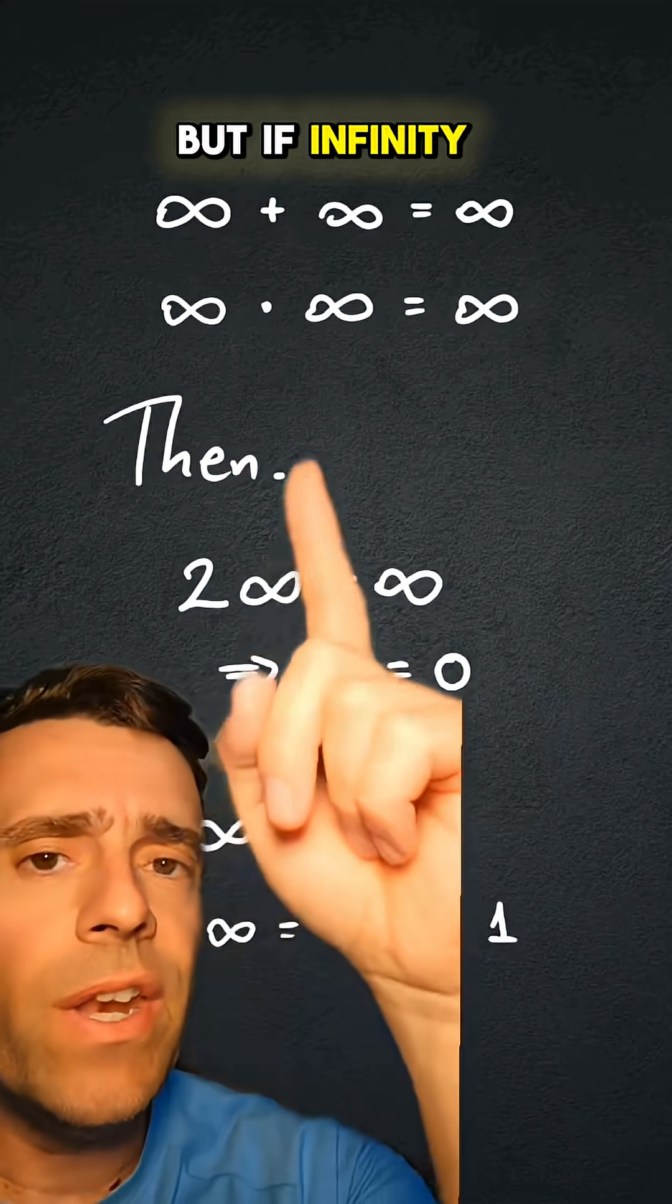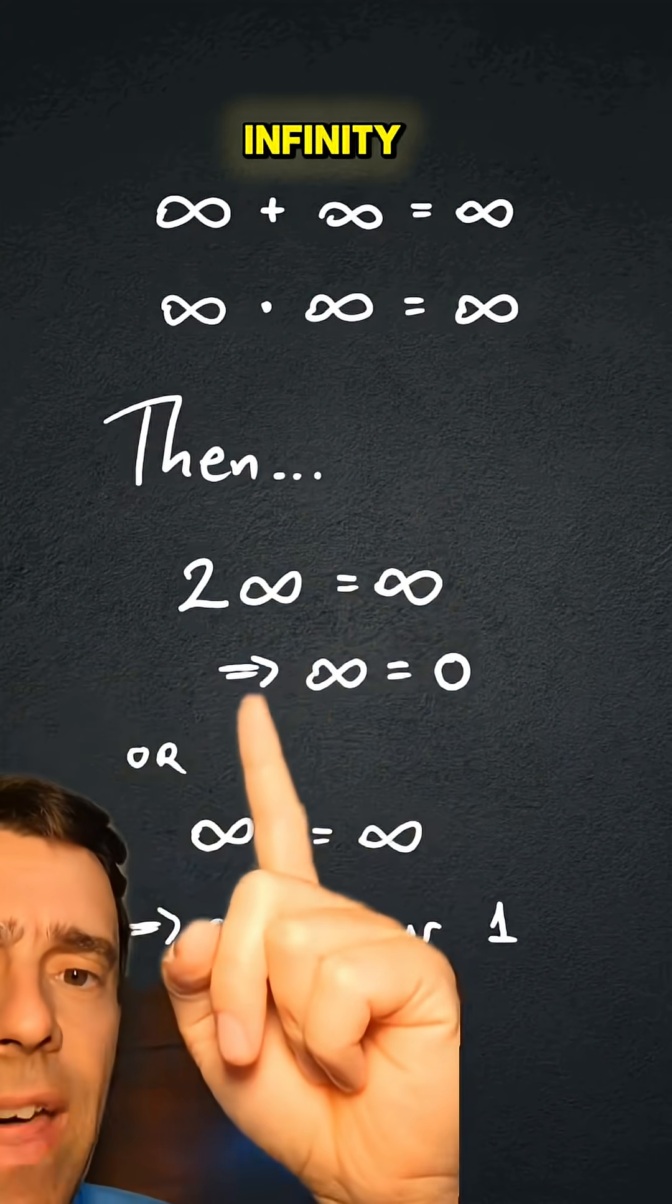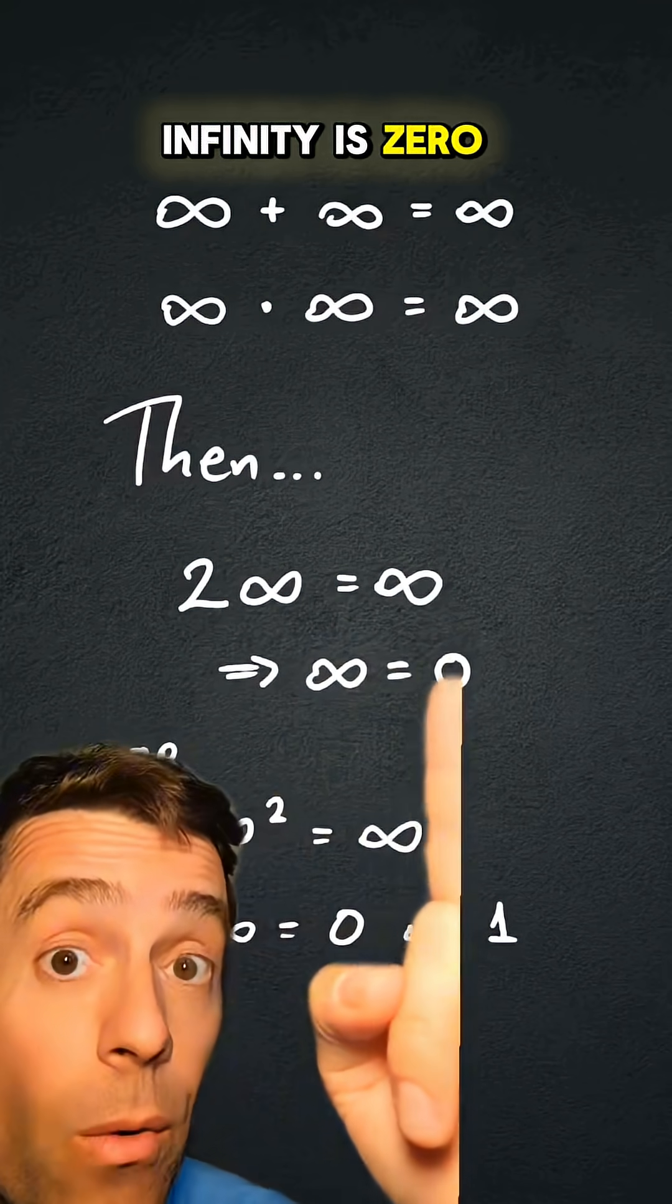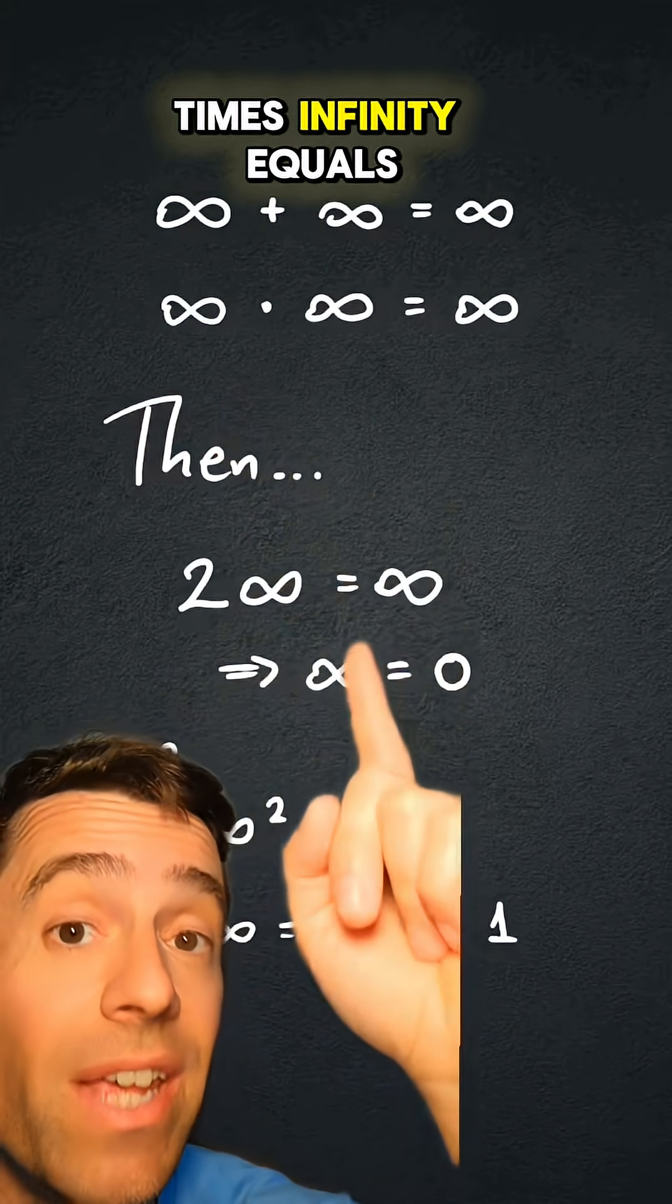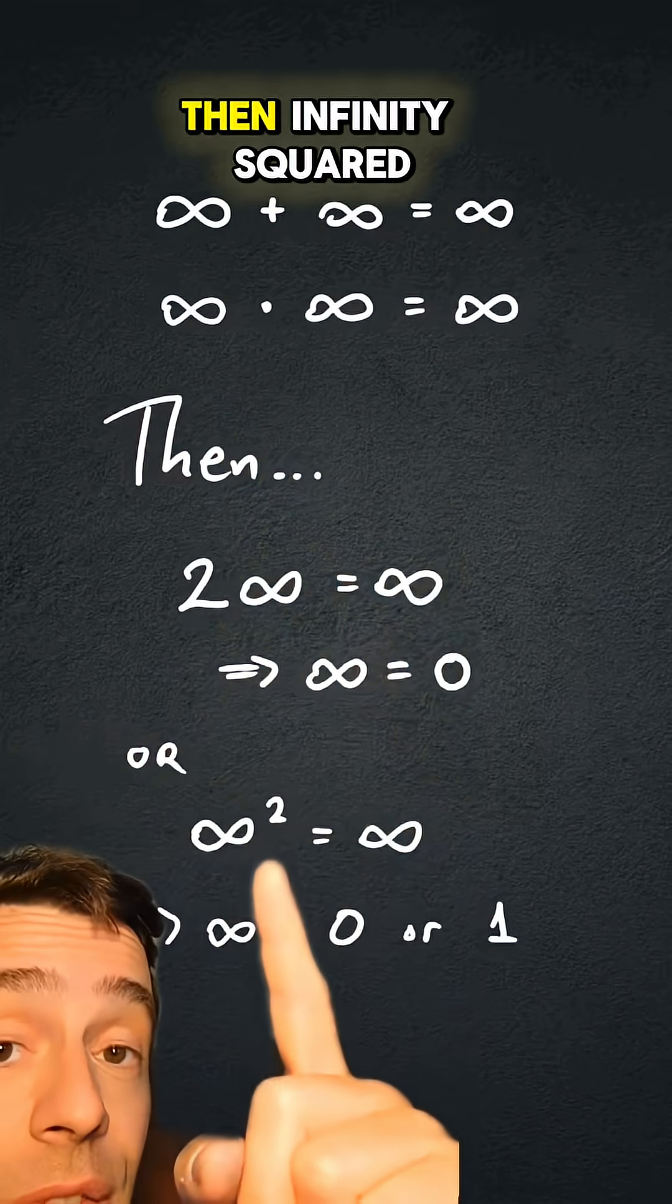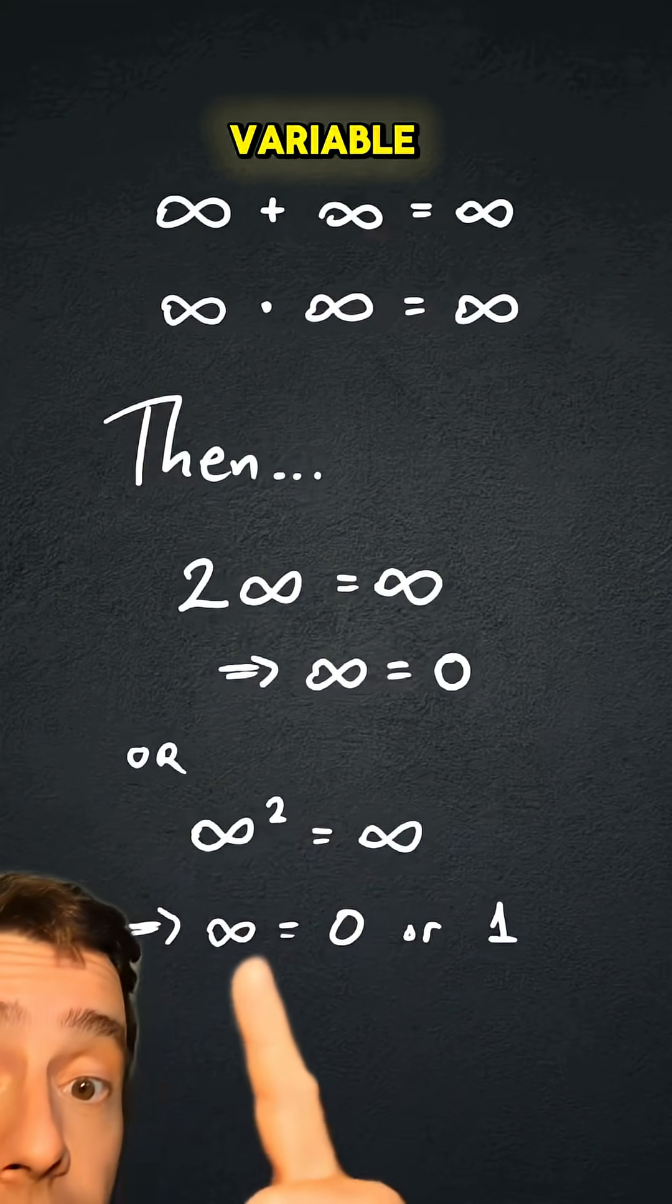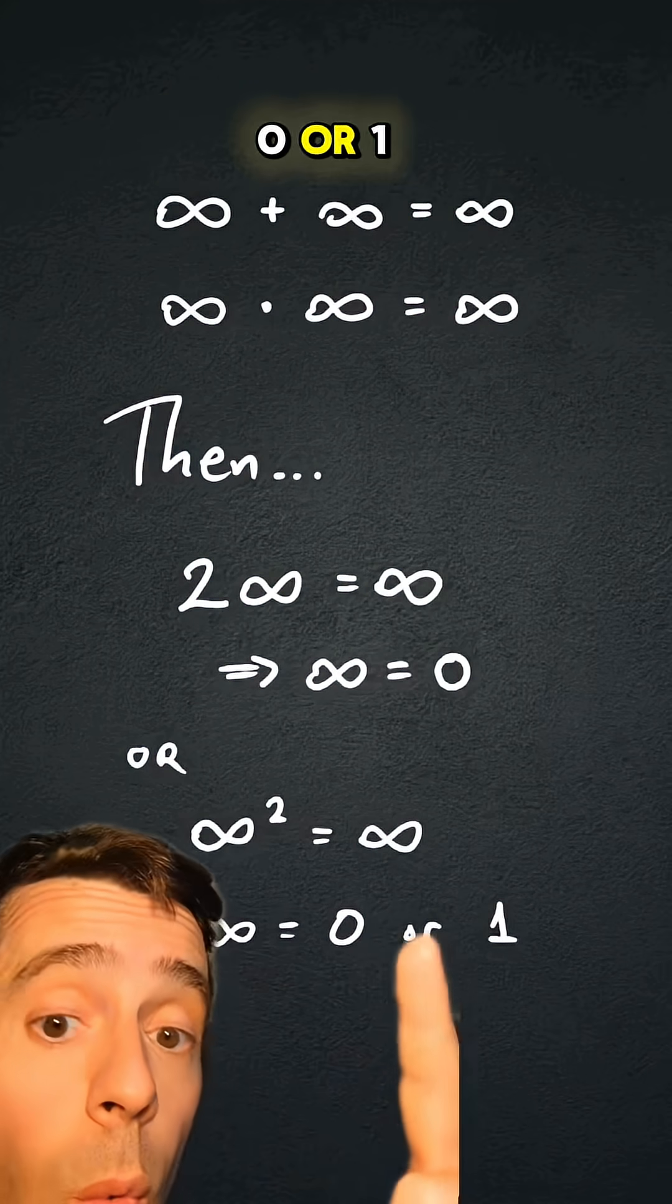But if infinity plus infinity equals infinity, that would say that twice infinity is infinity, which means that infinity is zero. And if infinity times infinity equals infinity, then infinity squared would be infinity, and if you treat infinity as x, as a variable, it would say that infinity is zero or one.